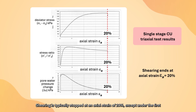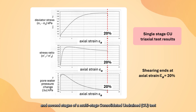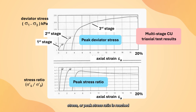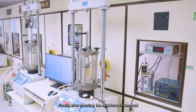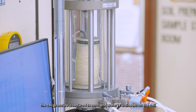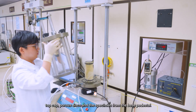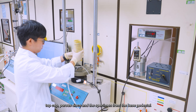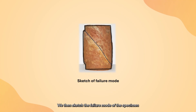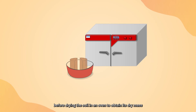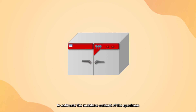Shearing is typically stopped at an axial strain of 20%, except during the first and second stages of a multi-stage consolidated undrained (CU) test, where shearing is stopped when either a peak deviator stress or a peak stress ratio is reached. After shearing, the axial force is removed, the cell pressure is reduced to zero, and water is drained from the cell. The cell is dismantled, the rubber membrane, top cap, porous disc and specimen are removed from the base pedestal, and we sketch the failure mode of the specimen. The wet mass is weighed and photographs taken before drying the soil in an oven to obtain its dry mass and estimate the moisture content.